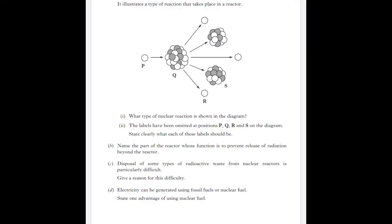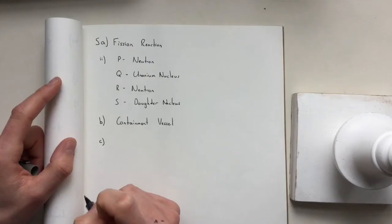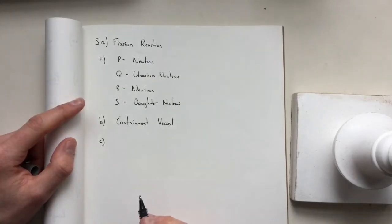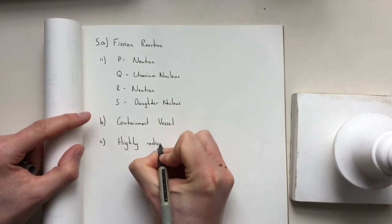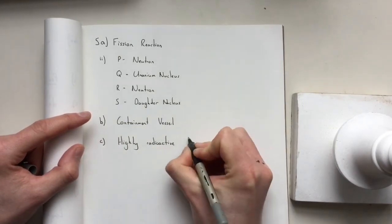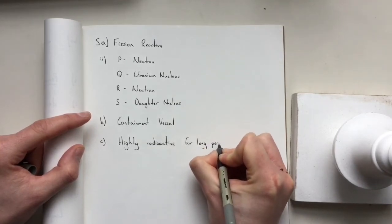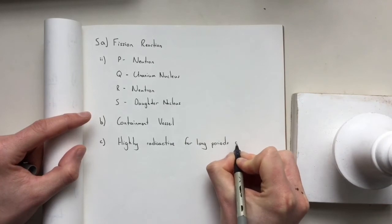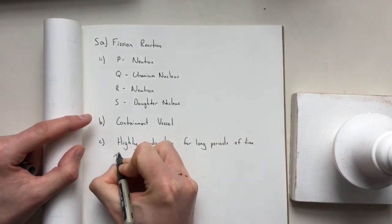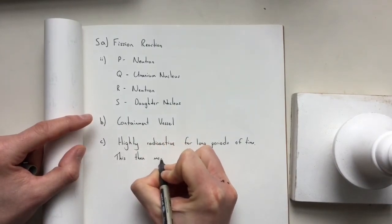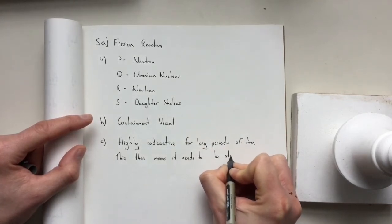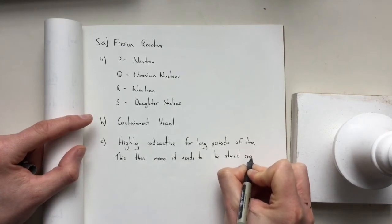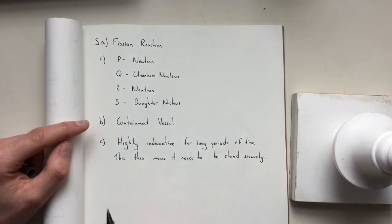For C, disposal of some types of radioactive waste from nuclear reactors is particularly difficult. Give a reason for this difficulty. One of the main reasons is it's highly radioactive for long periods of time. This then means it needs to be stored securely. That's one of the big issues with radioactive waste.